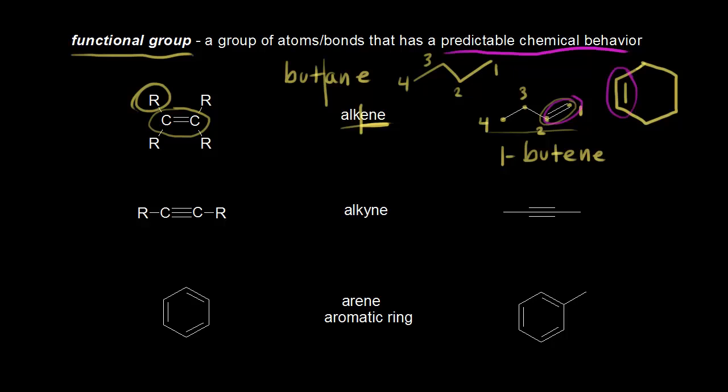Our next example of a functional group is an alkyne. So this time it's a carbon-carbon triple bond. Here you can see the carbon-carbon triple bond in an alkyne. If we look at the right, here's our example, and we number our carbons. We could call this carbon one.